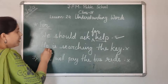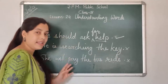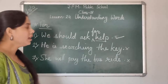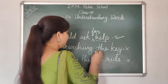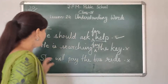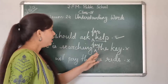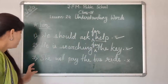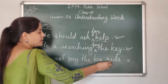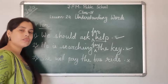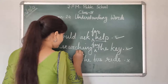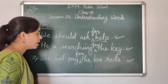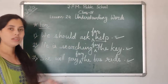Now we will discuss the second sentence: he is searching the key. In this sentence, we have to insert for in the proper position. We will insert for before the object, or we can say before the noun. If we place for before the key, the sentence will become correct: he is searching for the key. Now the sentence has become correct. Example number 3: she will pay the bus ride. Here also we will insert for before the noun: she will pay for the bus ride. Now this sentence is not sounding awkward anymore, and the meaning is also clear. So now the sentence is correct.